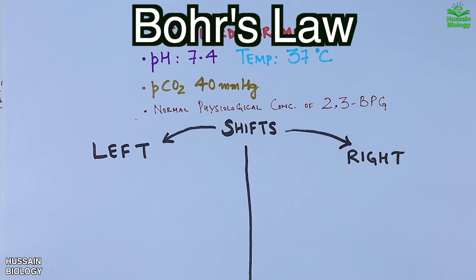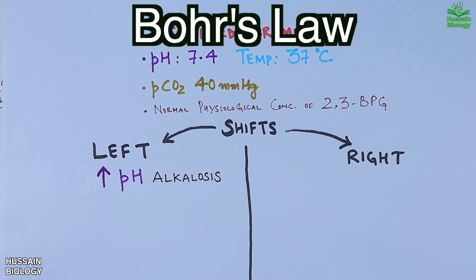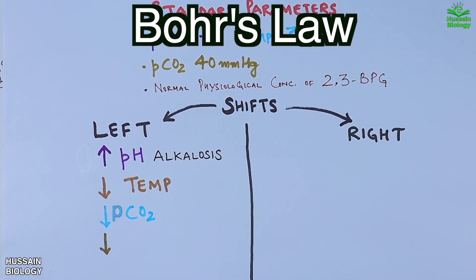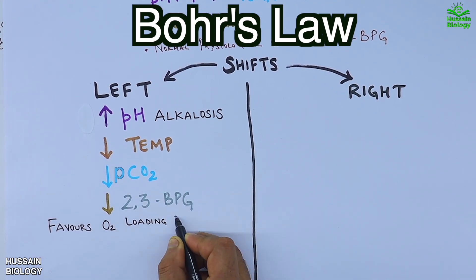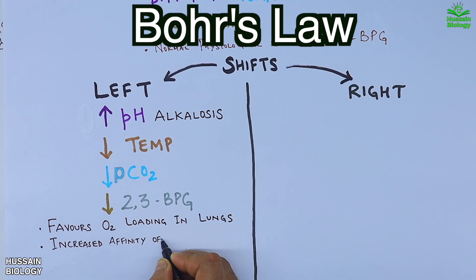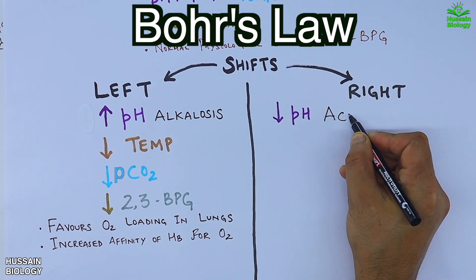For the curve to shift left, we need high pH (alkalosis), low temperatures, low PCO2, and low concentration of 2,3-BPG. All these conditions favor O2 loading in the lungs and increase the affinity of hemoglobin for O2, thus shifting the curve towards the left.